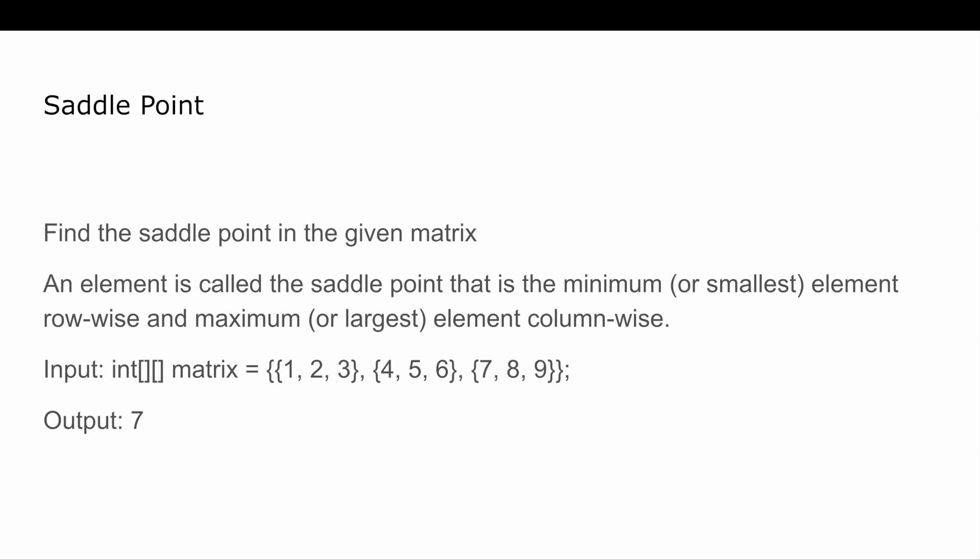In the given example where I have taken this integer matrix, you see the first row has 1, 2, 3, second row is 4, 5, 6, and third is 7, 8, 9. The output is 7. If you see in the 2D array, 7 is minimum in the row but maximum in the column, so the output is 7.